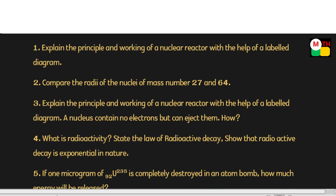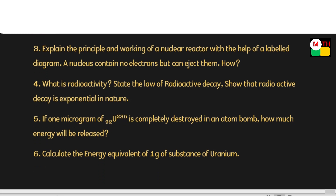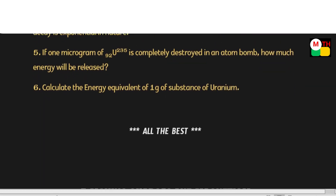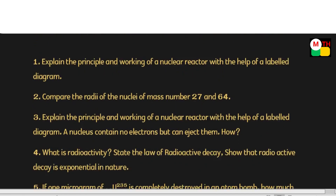Fourth is the radioactivity question. Radioactivity and the law of radioactive decay. If the radiation is completely destroyed in an atom bomb, how much energy will be released? This is also an important sum. The sixth: calculate the energy equivalent of 1 gram of uranium. That's why we have 6 questions and we will be able to prepare for the exam.